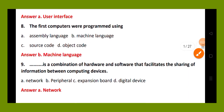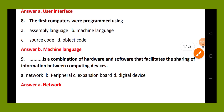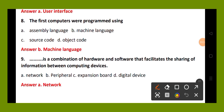Question number 9. Blank is a combination of hardware and software that facilitates the sharing of information between computing devices. Option A, network; option B, peripheral; option C, expansion mode; option D, digital device. The right answer is option A. Network is a combination of hardware and software that facilitates sharing of information between computing devices.